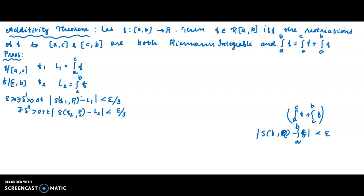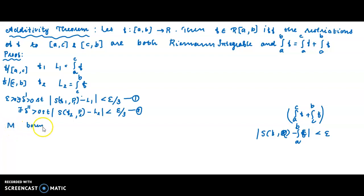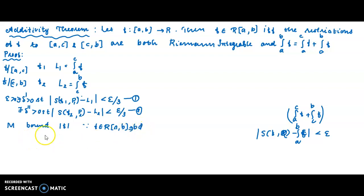Now we know that if f is Riemann integrable, then f is bounded. Let M be the bound of mod f, i.e., mod f is less than or equal to M.